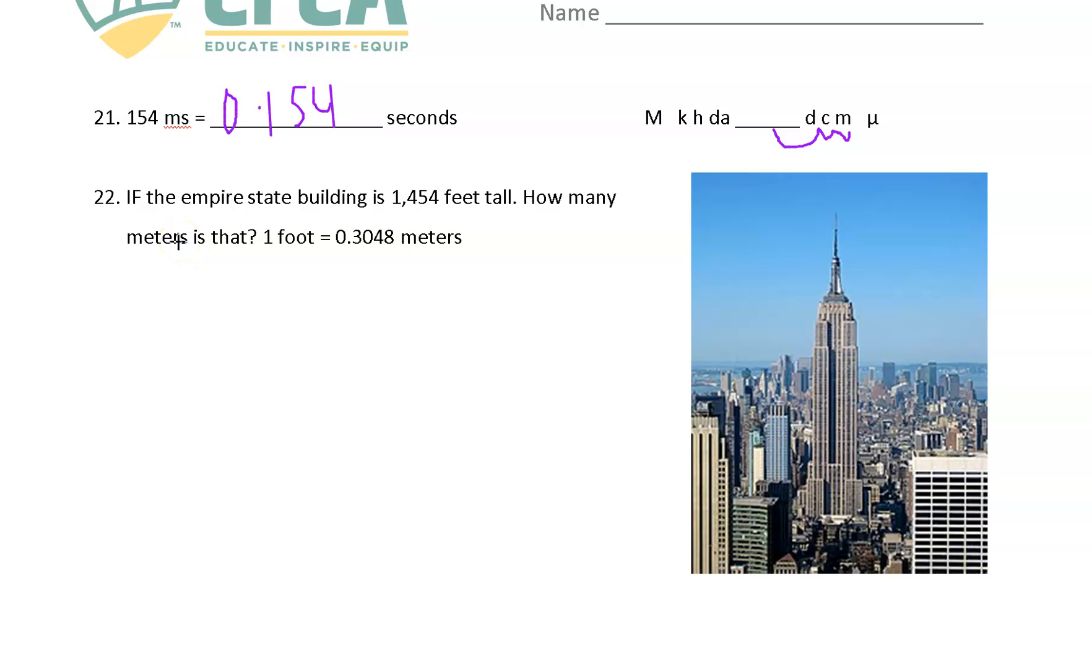And then finally, number 22, if the empire state building is 1454 feet tall, 1,454 feet tall, how many meters is that? Well, this is a T chart. You can't move the decimal with this. And that's why I showed you this method initially. And so it's very important. So what do we have? We have 1,454 feet. Whatever my unit is here, whatever my unit is here. My family who likes LSU would be really proud of me right now. What would goes down here. Whatever I'm trying to convert it to is up here. So this is meters.